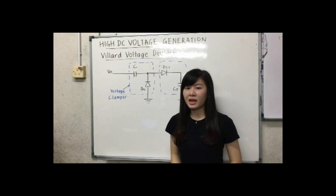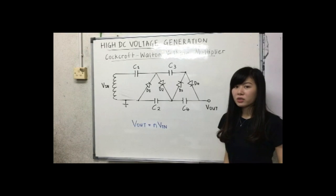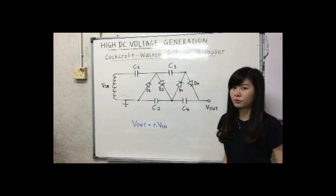But for my project, I'm using the Cockroft-Walton voltage multiplier. Cockroft-Walton voltage multiplier is formed by adding additional capacitor and diodes to the voltage doubler to form the new output node.